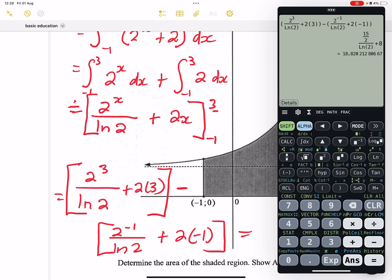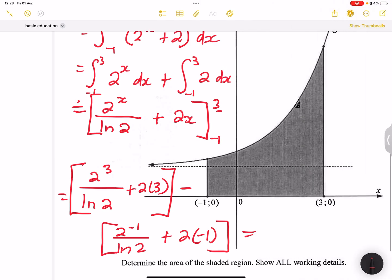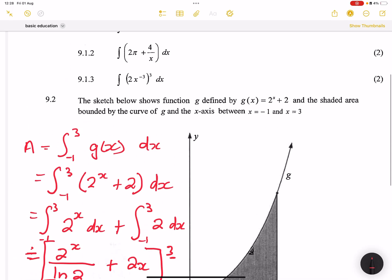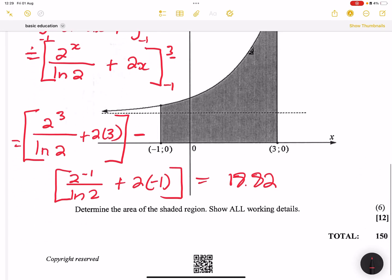That would be the area of the shaded region. So that would be 18.82. I don't think we were given what units this is. So this would be units squared. All right. Ladies and gents, that is how you are going to do integrals.